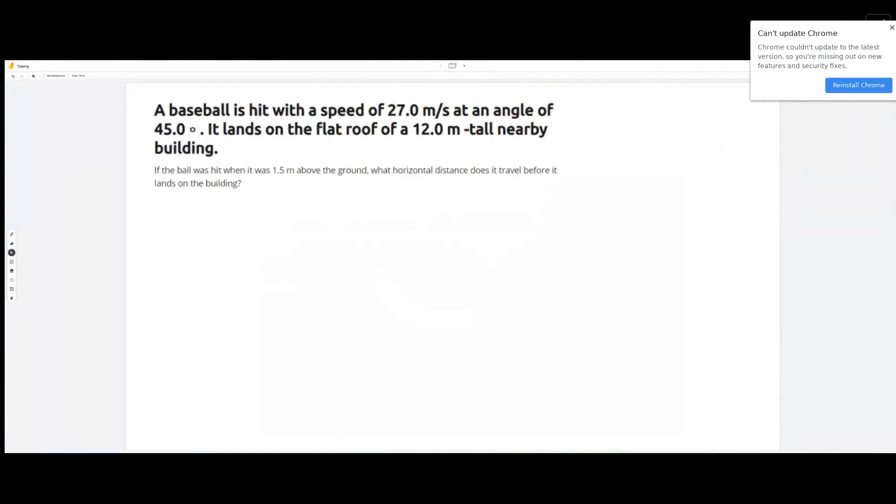In this problem we have a baseball that is hit with a speed of 27 meters per second at an angle of 45 degrees. It lands on a flat roof of a 12 meter tall nearby building. If the ball was hit when it was 1.5 meters above the ground, what horizontal distance does it travel before it lands on the building?